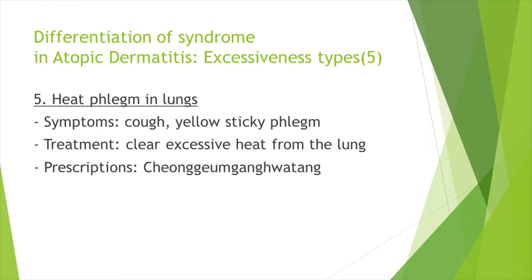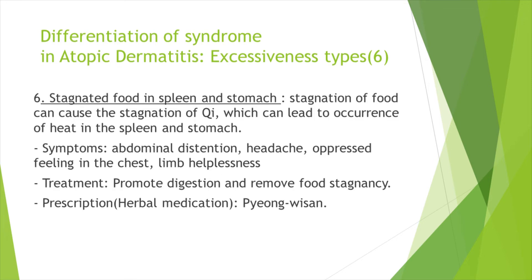Fifth, heat flame in the lungs: symptoms include cough and yellow sticky phlegm. To clear excessive heat from the lungs, 청금강화탕 is prescribed. Sixth, stagnation of food can cause stagnation of ki, which leads to noxious fire in the spleen and stomach. Symptoms are abdominal distension, headache, oppressive feeling in the chest, and limb helplessness. By promoting digestion and removing food stagnancy, symptoms are relieved. In this case, pyongwisan is prescribed.